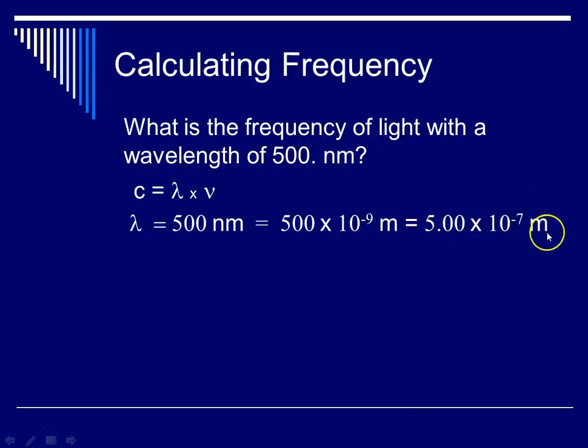And most of the light in the visible region is going to be on the order of this 10 to the minus 7 meters, give or take a couple powers of 10. And so here, recalling that C is our constant, 3 times 10 to the eighth meters per second.